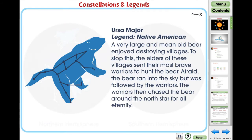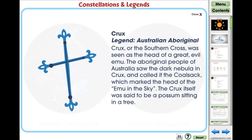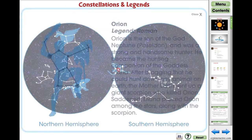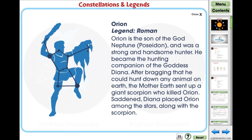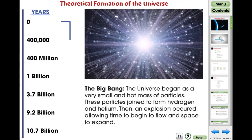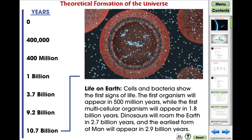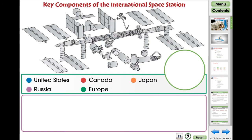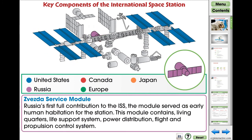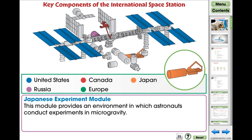Detailed instructions are provided. For this activity from our Solar System title, students learn about the legends of selected popular constellations in the northern and southern hemispheres. For this activity from our Galaxies and the Universe title, students learn about the theoretical formation of our universe with the timeline of the Big Bang. For this activity from our Space Travel and Technology title, students learn about the key components of the International Space Station and which country supplied it.